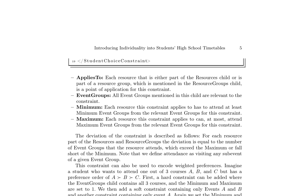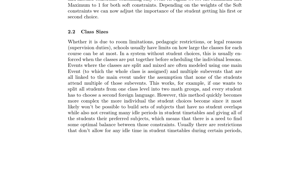The student choice constraint is a novel constraint introduced to regulate resource allocation in event scheduling. It applies to each resource that is either a direct child of the resources node or part of a resource group, enforcing a minimum and maximum bound on the number of event groups that each resource must attend. The deviation is calculated as the absolute difference between the actual number of event groups attended and the specified bounds, serving as a penalty for violating the constraint and encouraging the optimization algorithm to find solutions that respect the desired attendance ranges.